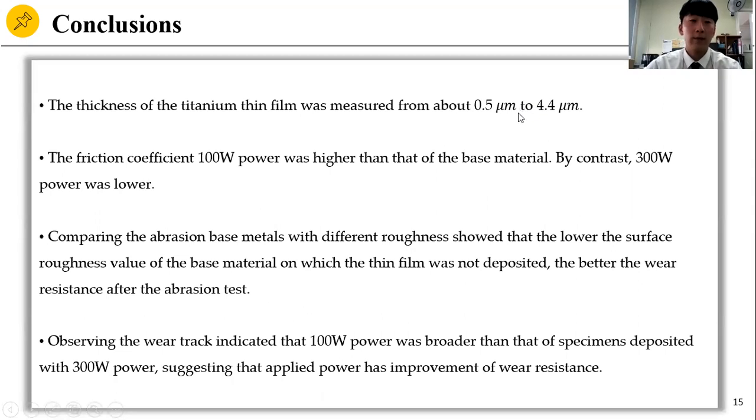Finally, speaking of the conclusion: First, the thickness of the titanium thin film was measured from about 0.5 micrometers to 4.4 micrometers. Second, the friction coefficient of 100 Watt power was higher than that of base material. By contrast, 300 Watt power was lower. Third, comparing abrasion base metal with different roughness showed that the lower the surface roughness value of the base metal on which the thin film was not deposited, the better the wear resistance after the abrasion test. Observing the wear track indicated that 100 Watt power was broader than that of specimens deposited with 300 Watt power, suggesting that applied power has improvement of wear resistance.